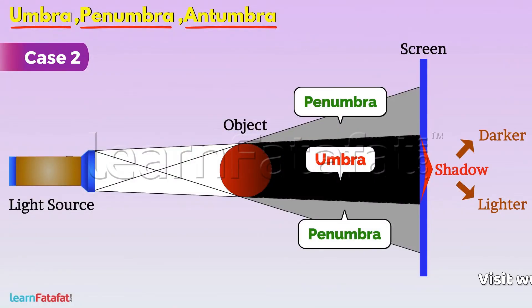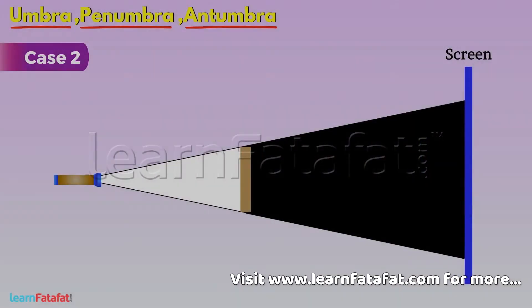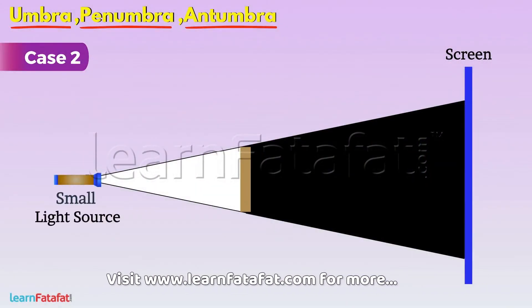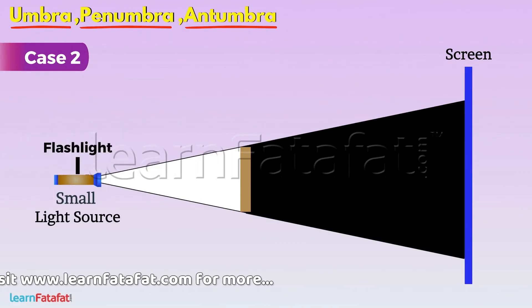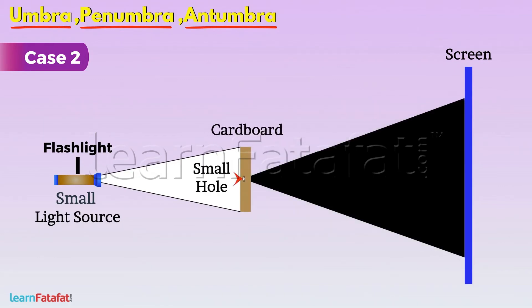Case 2. Suppose we replace the source with very small light source such as flashlight. If it is not available, you can also place a cardboard with a small hole in front of light source.